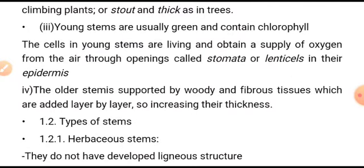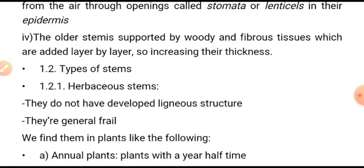Older stems are supported by wood and fibrous tissue, which are added layer by layer, increasing their thickness. If the stem is at an old age, it is likely to be supported by wood. At a mature stage it looks like wood. There are different types of stem: first, herbaceous stems, which do not have a developed rigid structure and are generally flat.